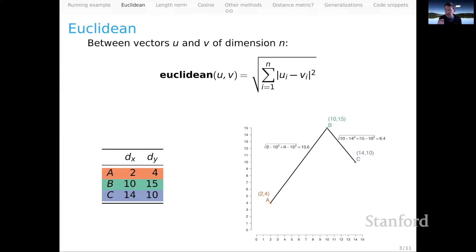You can see that Euclidean distance is capturing the first perspective we took on the vector space, which unites the frequent items B and C as against the infrequent one, A.